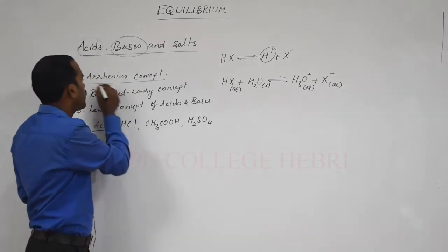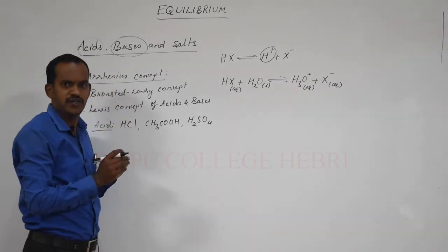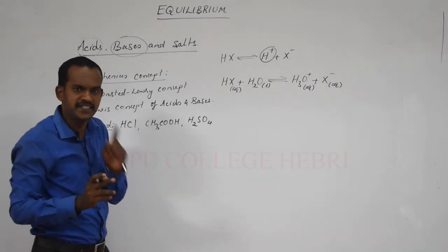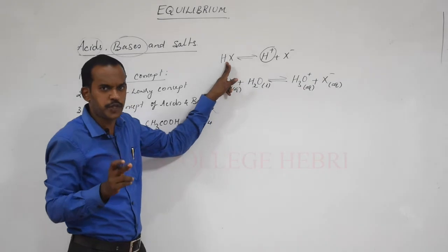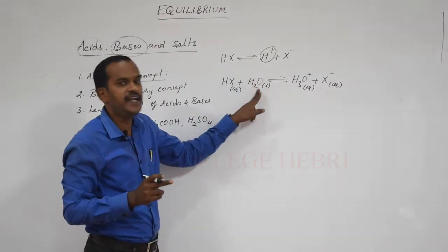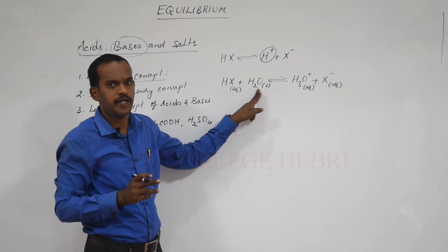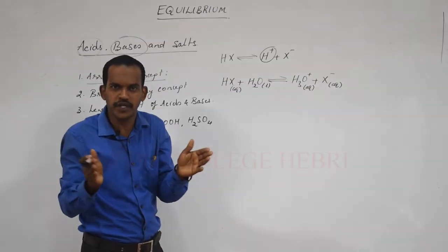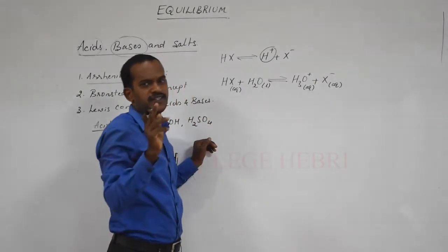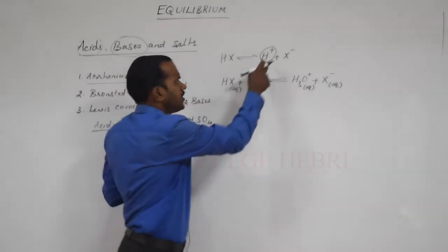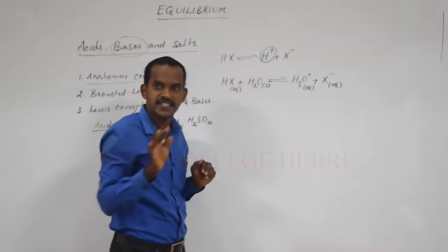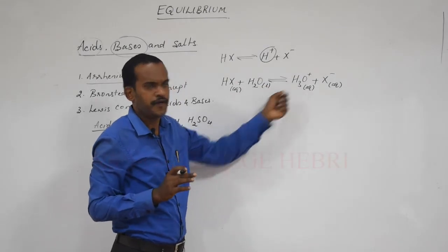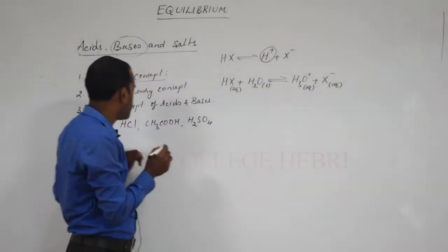From the Arrhenius concept — also called Arrhenius theory — acid is a substance which dissociates to give H+ ions when it is dissolved in water. Since H+ ion is unstable, it will combine with H2O forming the hydronium ion.